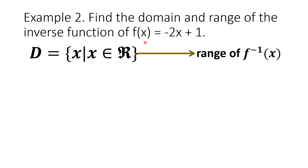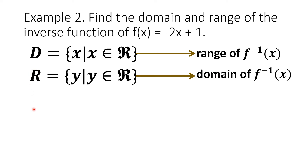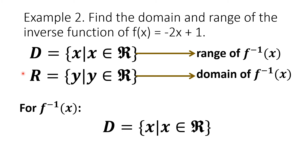y may take any value as well when we substitute any number to x. So the range of the original function is the set of real numbers also. This range will be the domain of the inverse function. Hence, both the domain and range of the inverse are the set of real numbers. That is, the domain is x such that x is an element of real numbers, and the range is the set of y where y is an element of real numbers.